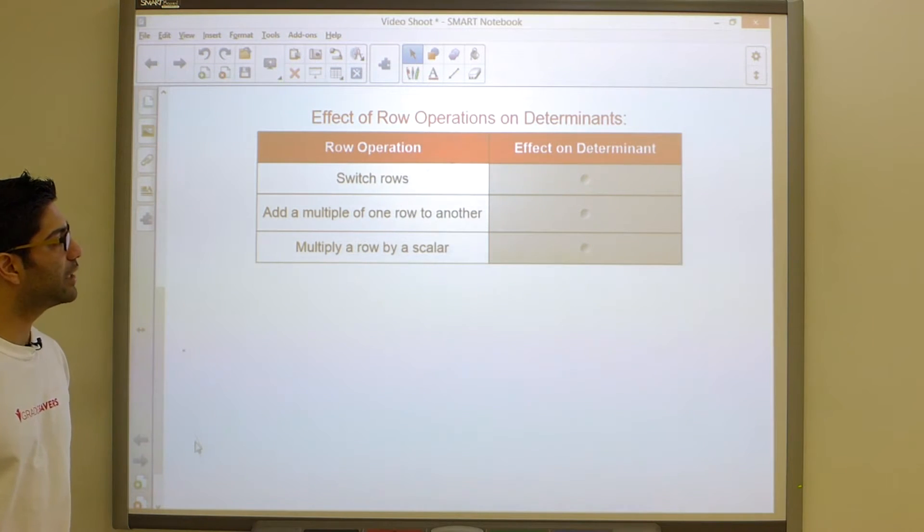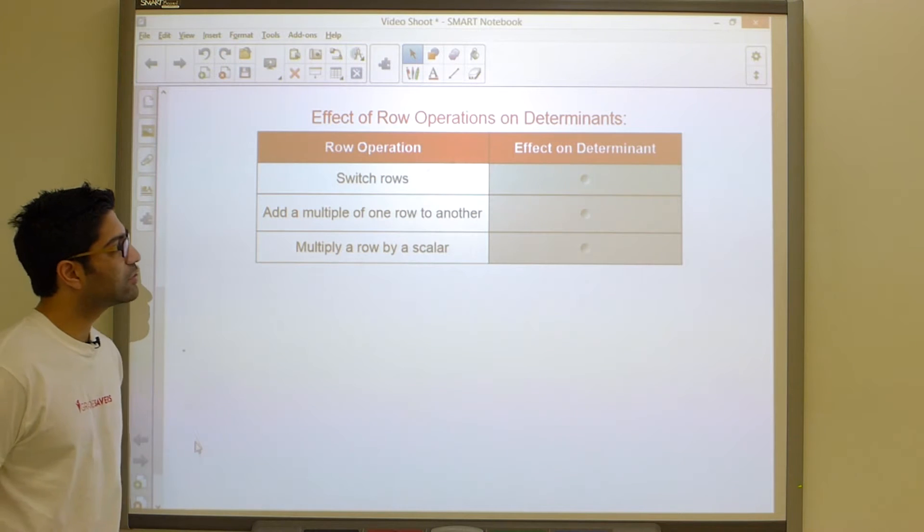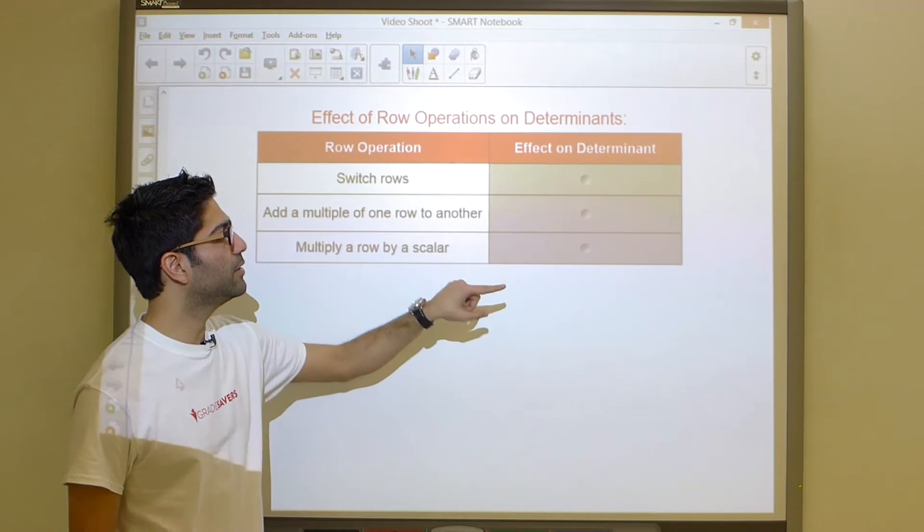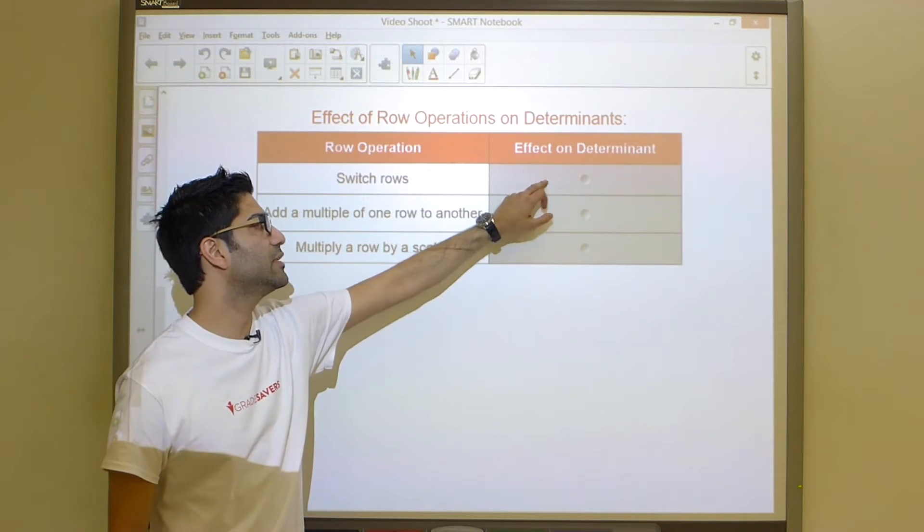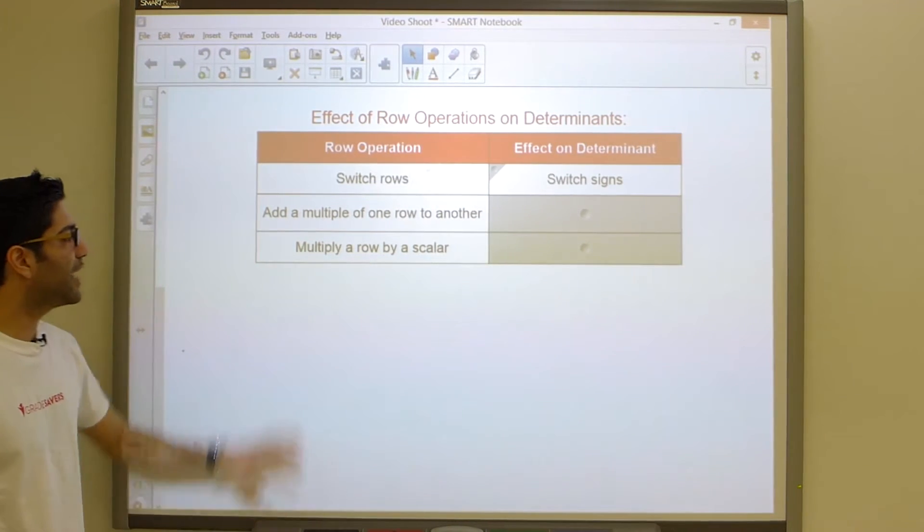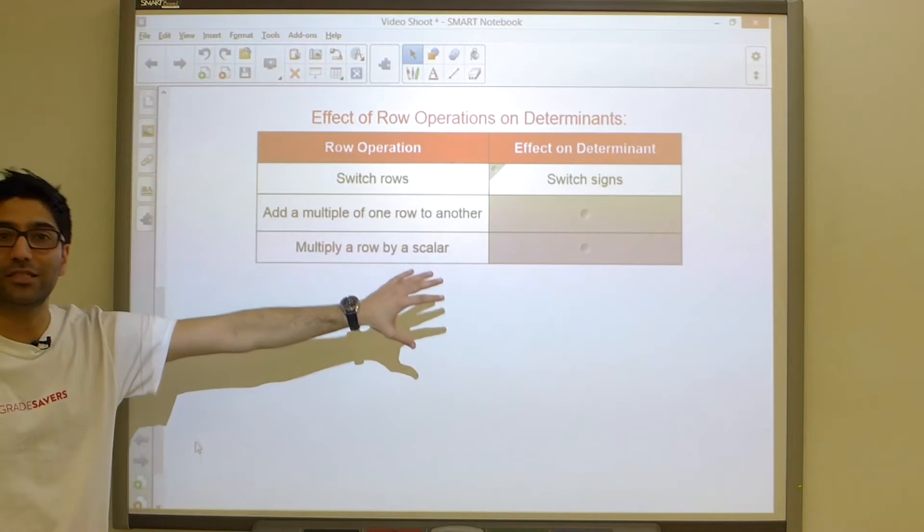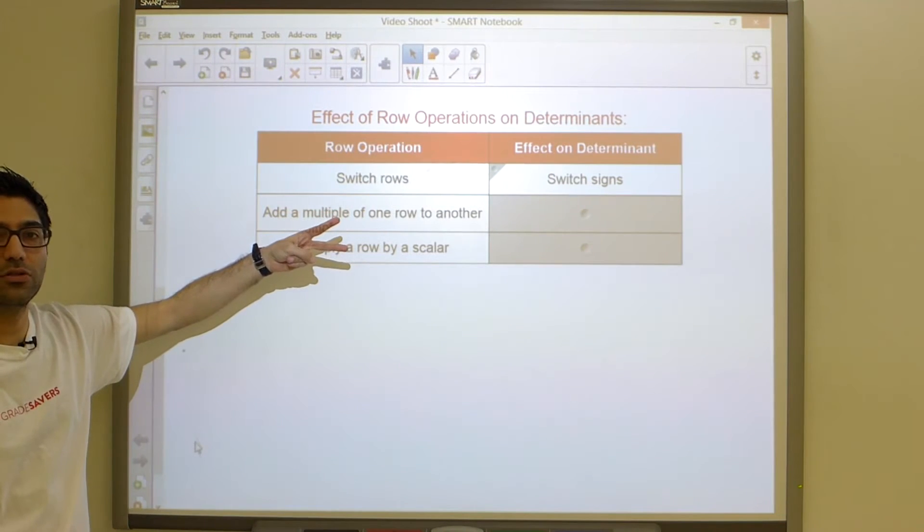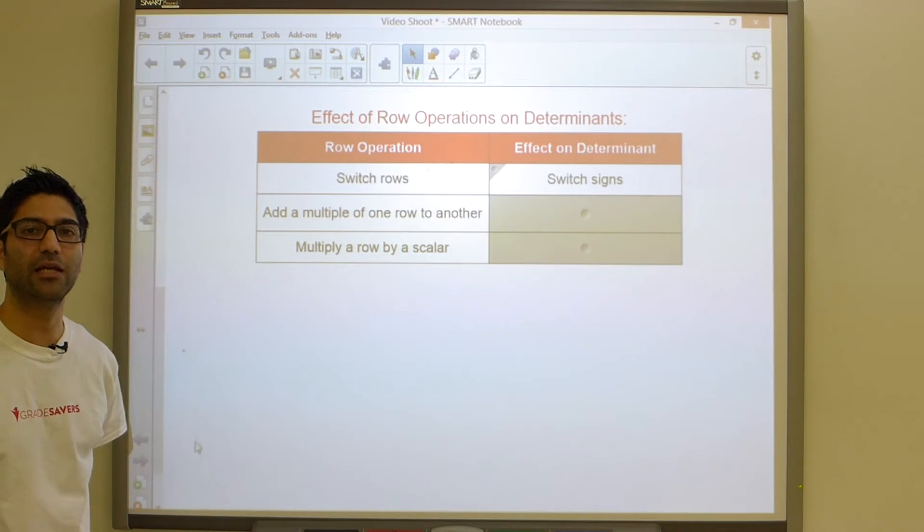So it turns out that there are only three row operations. The first one in our case is switching rows. It turns out that switching rows, the effect of switching rows on the determinant, is that it changes the sign of the determinant. So if I have a matrix and its determinant is 10, I manipulate the matrix by switching any two rows, the determinant is going to become negative 10.